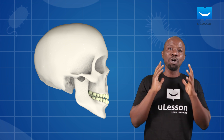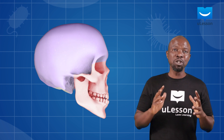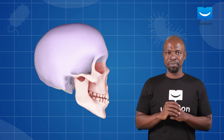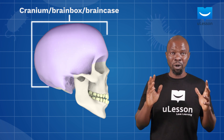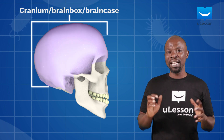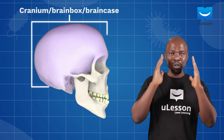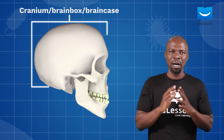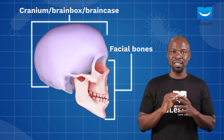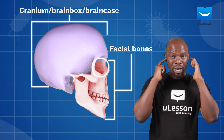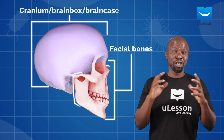The skull is composed of several flat bones that are sutured or joined together to form two major parts. The first is the cranium, or the brain box — some people call it the brain case. This is an arc-shaped, almost round part that houses your brain and protects it from harm. The other part is the facial skeleton, which houses organs like your eyes and your eardrums, as well as the nasal cavity and the jaws.